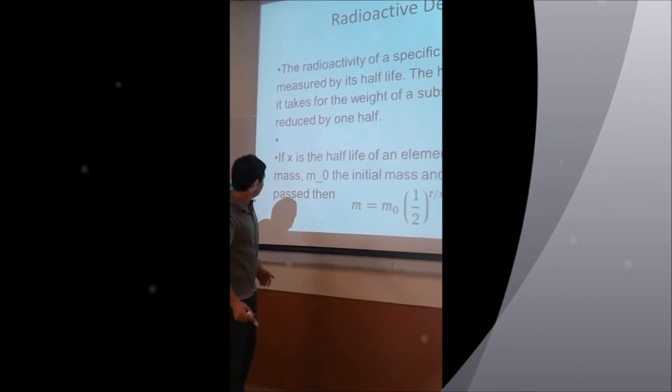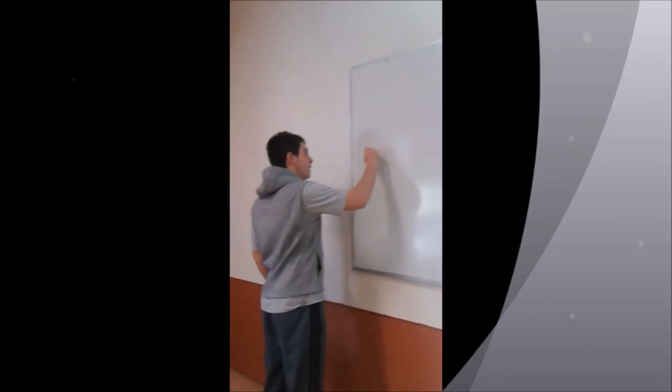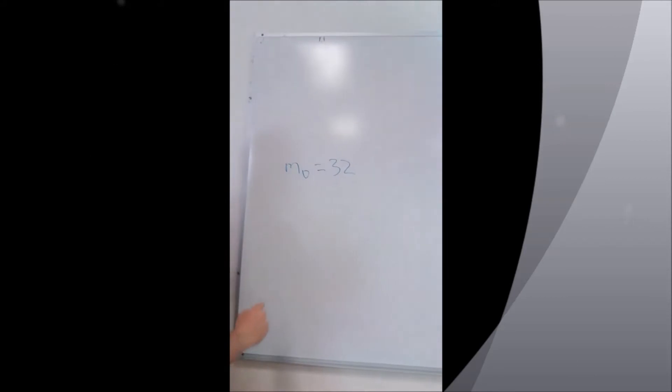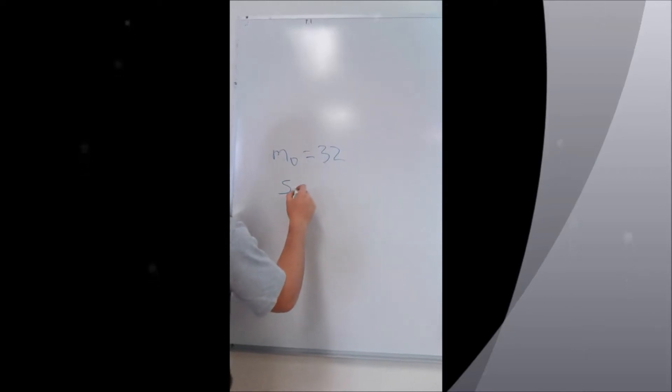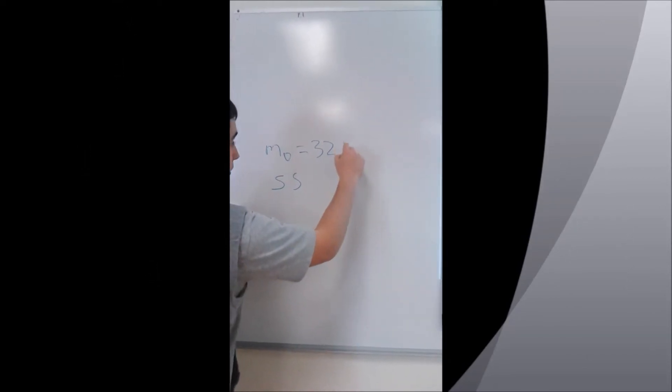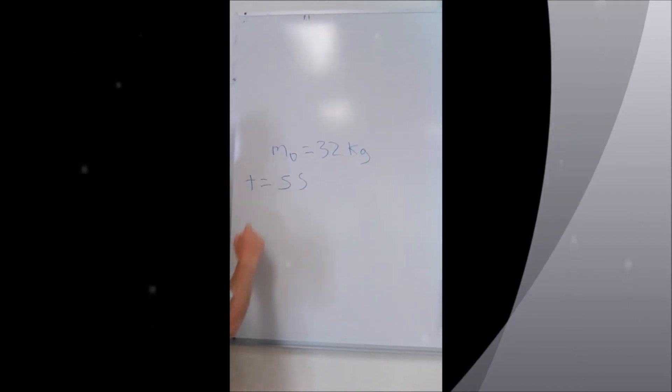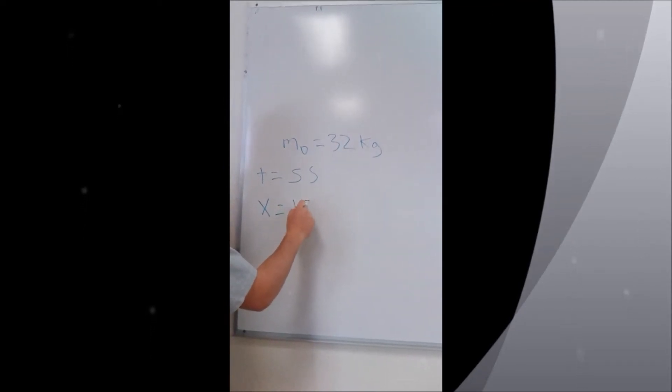So why don't we do an example? Let's say that your initial mass is equal to 32 kilograms. Let's say that the time that has passed is 5 seconds, and let's say that the half-life is 1 second.